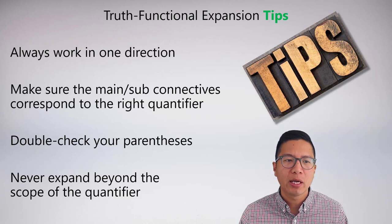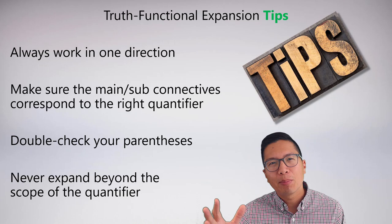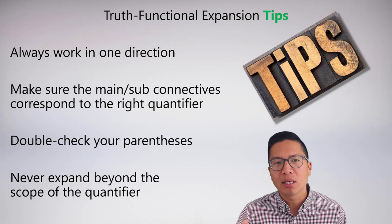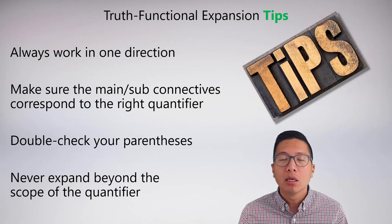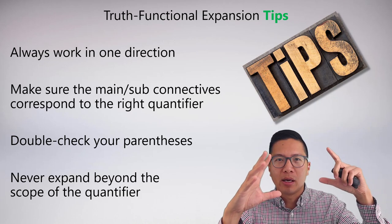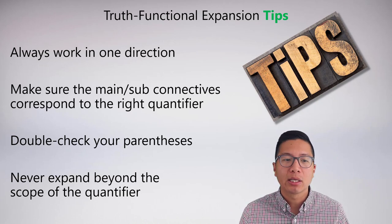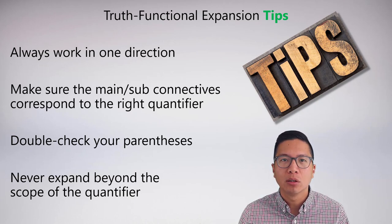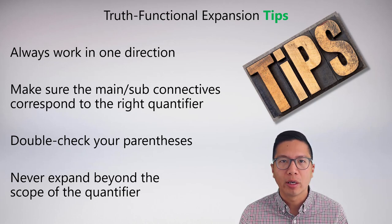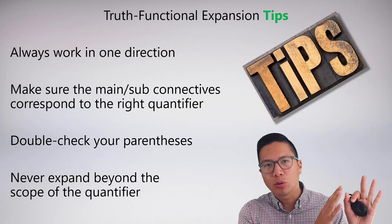Here are some tips for doing truth functional expansions. Always work in one direction—either outside in or inside out; if you mix it up, you might confuse yourself, so just pick a way and stick with it. You also need to make sure that the main and sub-connectives correspond to the right quantifier. The most common mistake people make is not putting enough brackets in place to make clear where the conjunctions, disjunctions, and main connectives are. Always double-check your brackets and parentheses. And never expand beyond the scope of the quantifier.